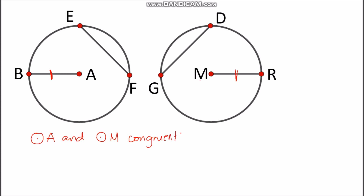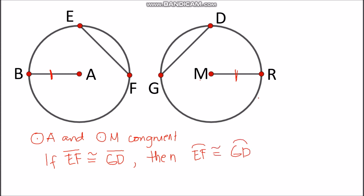With congruent circles, if chord EF is congruent with chord GD on the other circle, then by applying the theorem we can also say that the corresponding arcs are congruent — arc EF is congruent with arc GD. This works because the two circles containing the two chords are already congruent. Conversely, if arc EF is congruent with arc GD, then the corresponding chords segment EF and segment GD are also congruent.